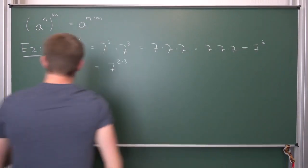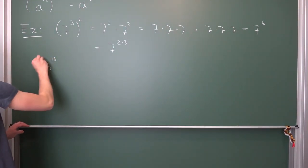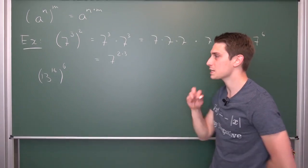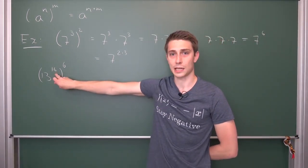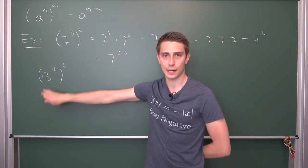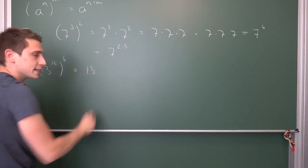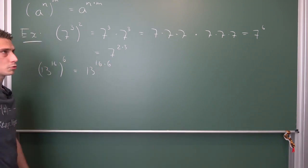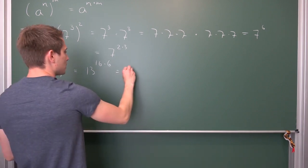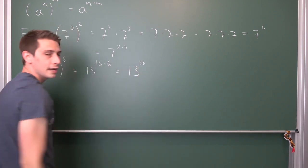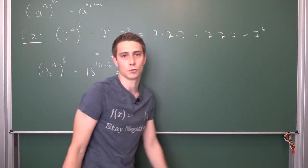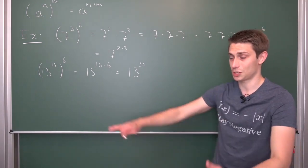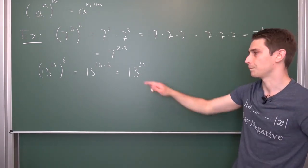For another example, let's choose a big one: 13 to the 16th power, to the 6th power. Our n is 16, our m is 6, and our base a is 13 — which is preserved. We multiply the exponents: 16 times 6. 5 times 16 is 80, so that's 96. So the result is 13 to the 96th power. A calculator will just spit out an error because this number is growing exponentially — that's what you call exponential growth. It explodes the higher you take the exponent.